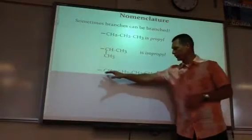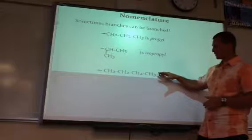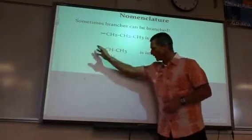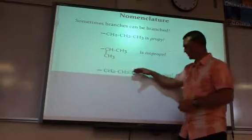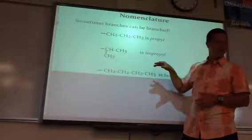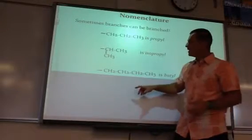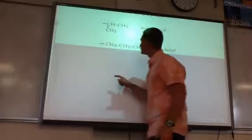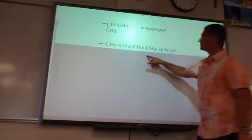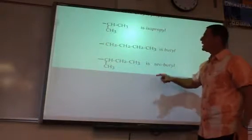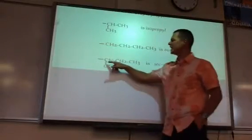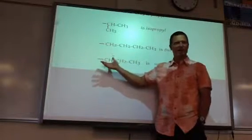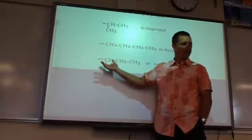A normal butyl would be where there's four carbons right in a row — this is the parent over here, and this would be a four-carbon branch coming off of the parent. If the second of the four carbons is attached, that's called sec-butyl, like the second carbon is attached.